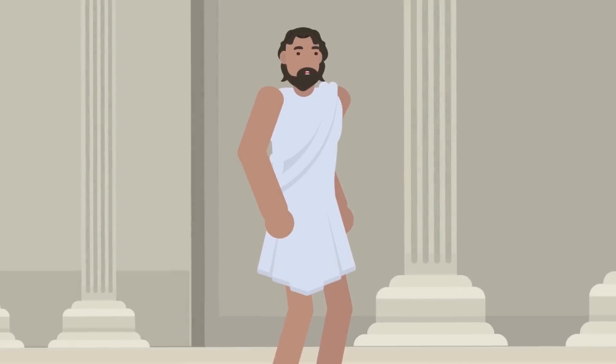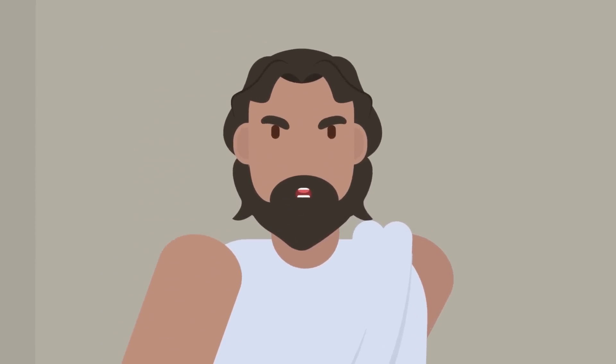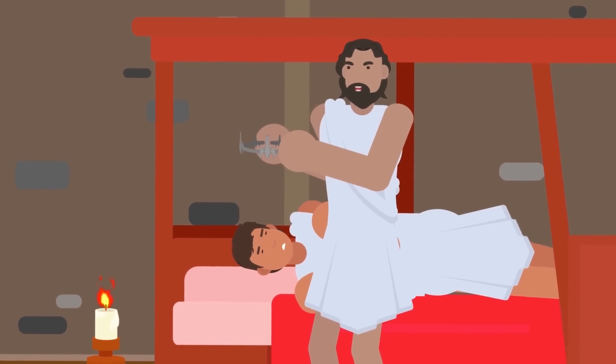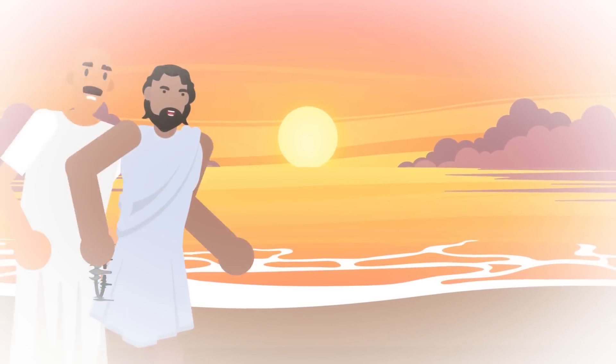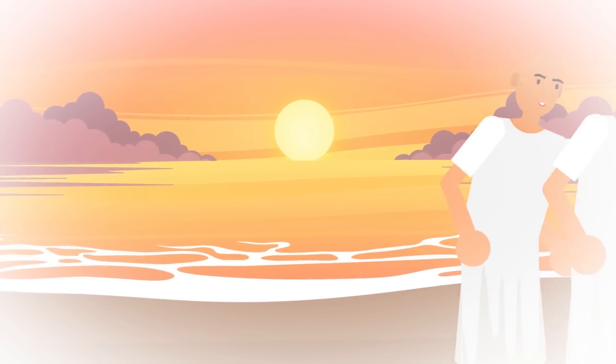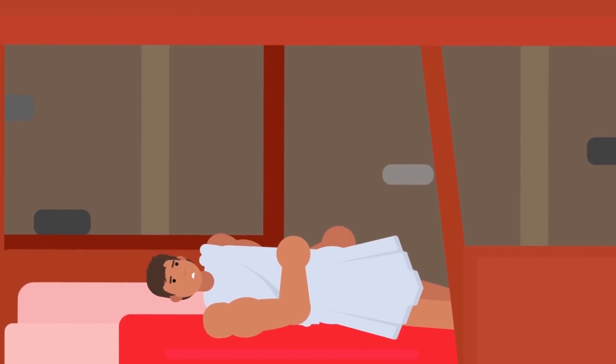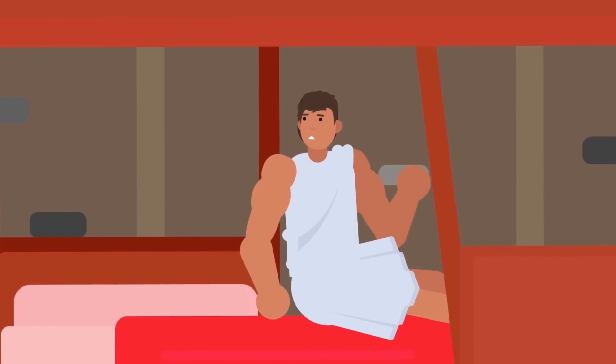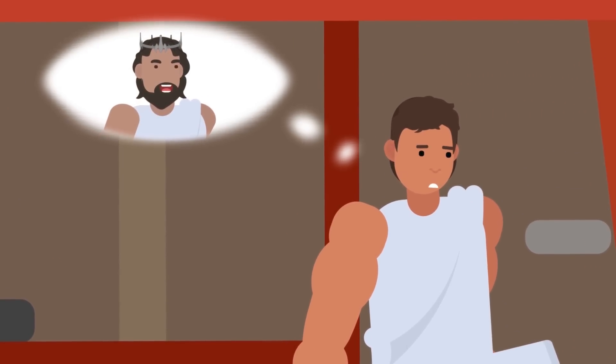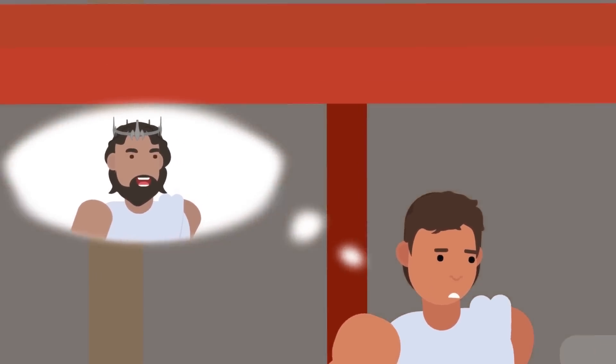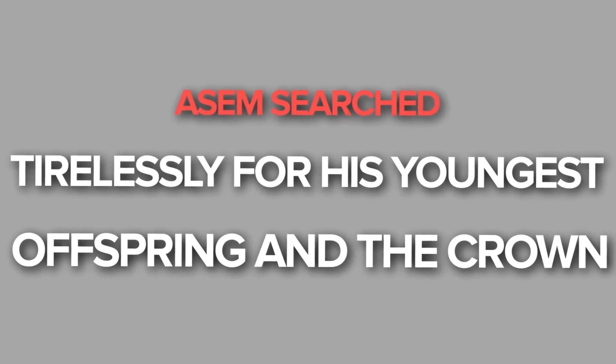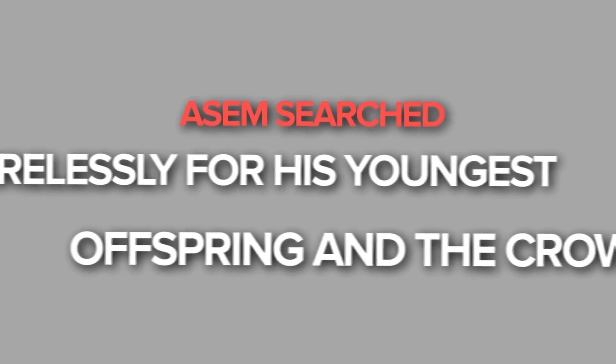The most devastating betrayal of all came from the youngest son of Asim. He came into his father's bedroom while he slept, and took the crown from his head. The youngest son and his followers ran away with the crown. When Asim awoke, his heart broke with what his youngest son, whom he loved more than anyone or anything in the entire world, had done. An endless rage welled up in the king, and he turned the Earth into a smoking wasteland. Asim searched tirelessly for his youngest offspring and the crown.